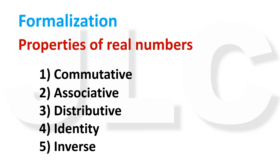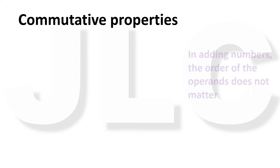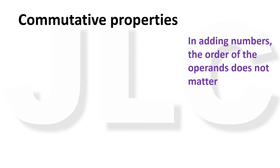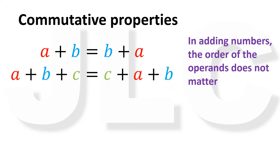Let's discuss each property one by one. The commutative property applies to addition and multiplication. For addition, it states that when we add numbers, the order of the operands does not matter. A plus B is equal to B plus A. A plus B plus C is equal to C plus A plus B.